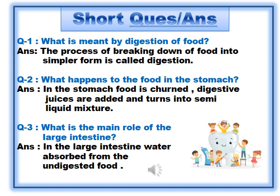Question number 2: What happens to the food in the stomach? Answer: In the stomach, food is churned, digestive juices are added, and it turns into a semi-liquid mixture.